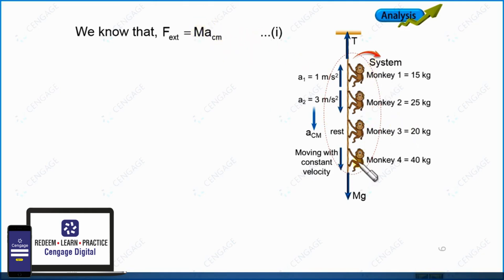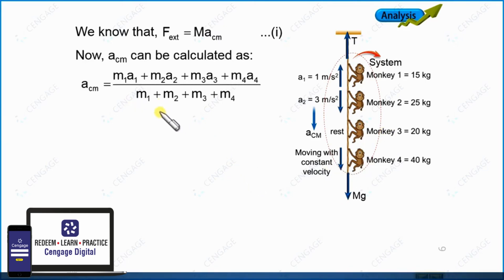Capital M is the mass of the four monkeys. So a_cm we can write as m1*a1 plus m2*a2 plus m3*a3 plus m4*a4 divided by m1 plus m2 plus m3 plus m4.